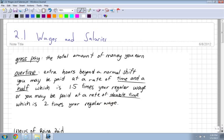Alright, section 2.1 is wages and salaries. So I just want to go over a few definitions before I look at just a couple examples for this section.